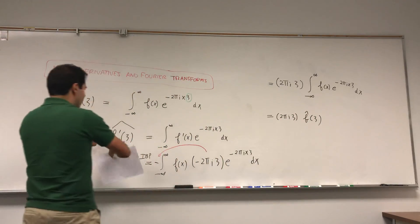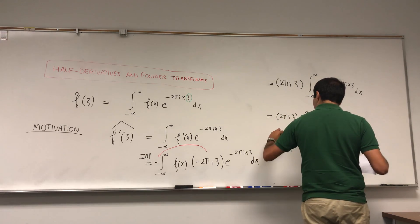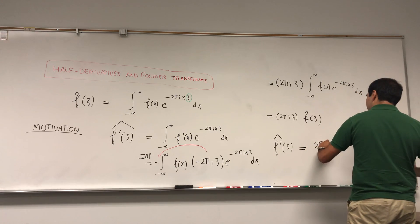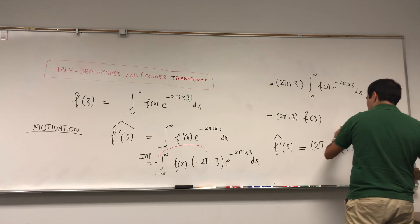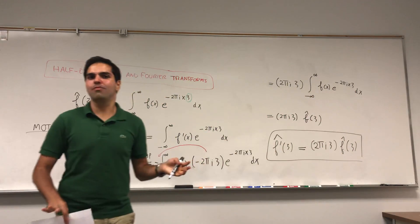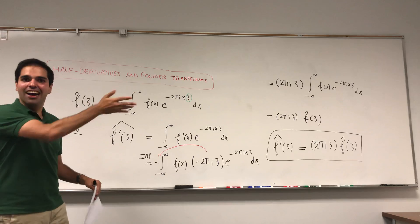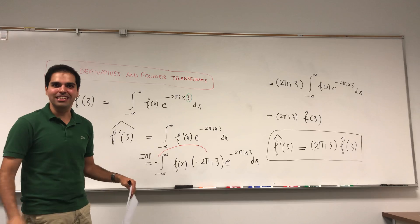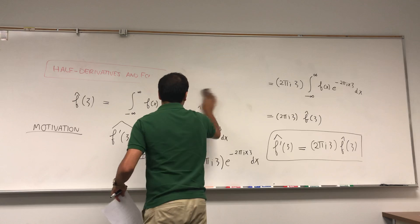So the Fourier transform of the derivative of f equals 2πiξ·f̂(ξ). That's why Fourier transforms are very nice — they turn differentiation into multiplication, and therefore turn ODEs or PDEs into just a polynomial equation. Except if you study nonlinear PDEs, then it gets complicated, because multiplication turns into convolution, and we don't want that.